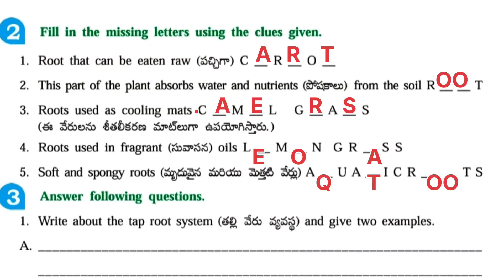Next one, fill in the missing letters using the clues given. Root that can be eaten raw — that is carrot, C-A-R-R-O-T. Next, second one: this part of the plant absorbs water and nutrients from the soil — that is root. Third one: roots used as cooling mats — Camelgrass. Fourth one: roots used in fragrant oils — Lemongrass. Fifth one: soft and spongy roots — aquatic roots.